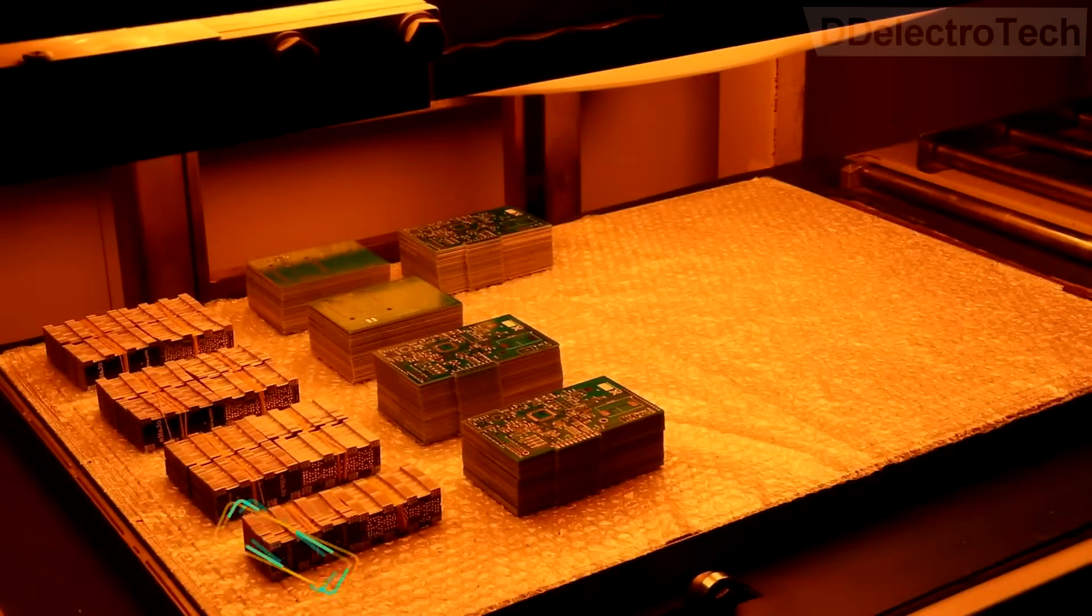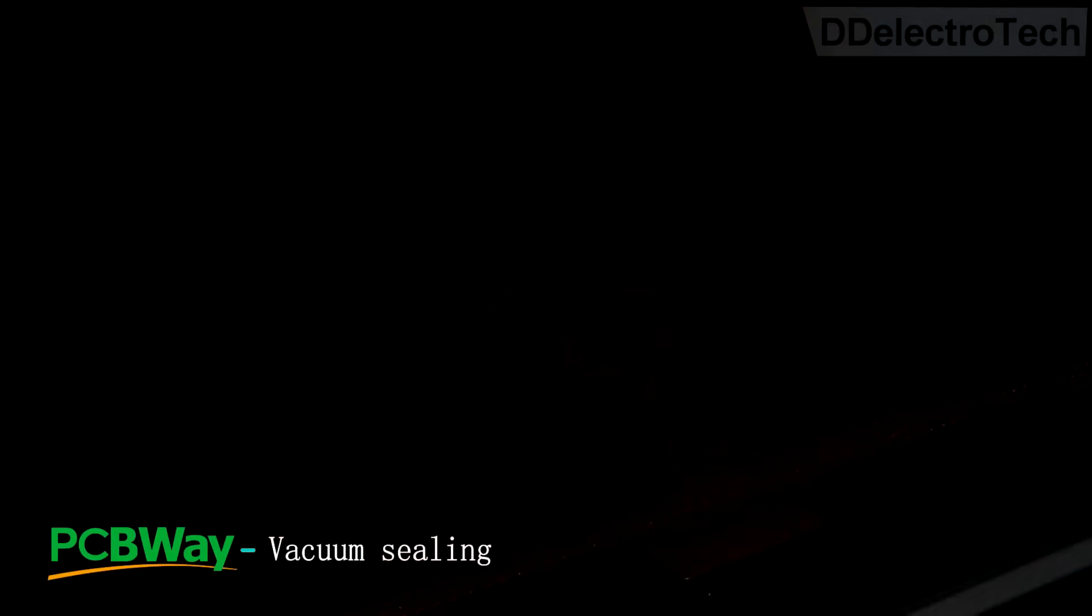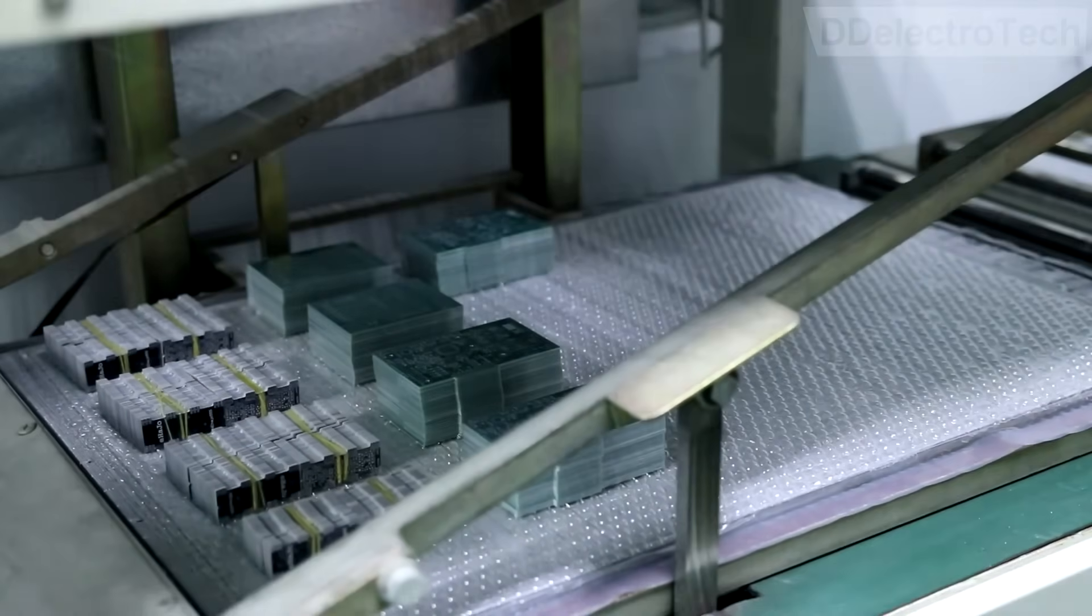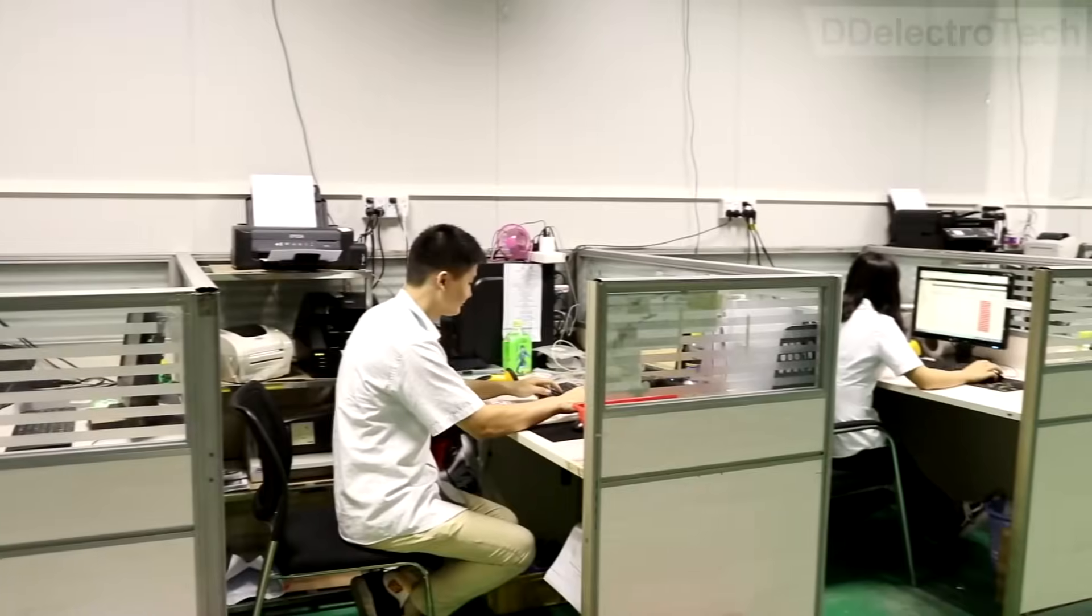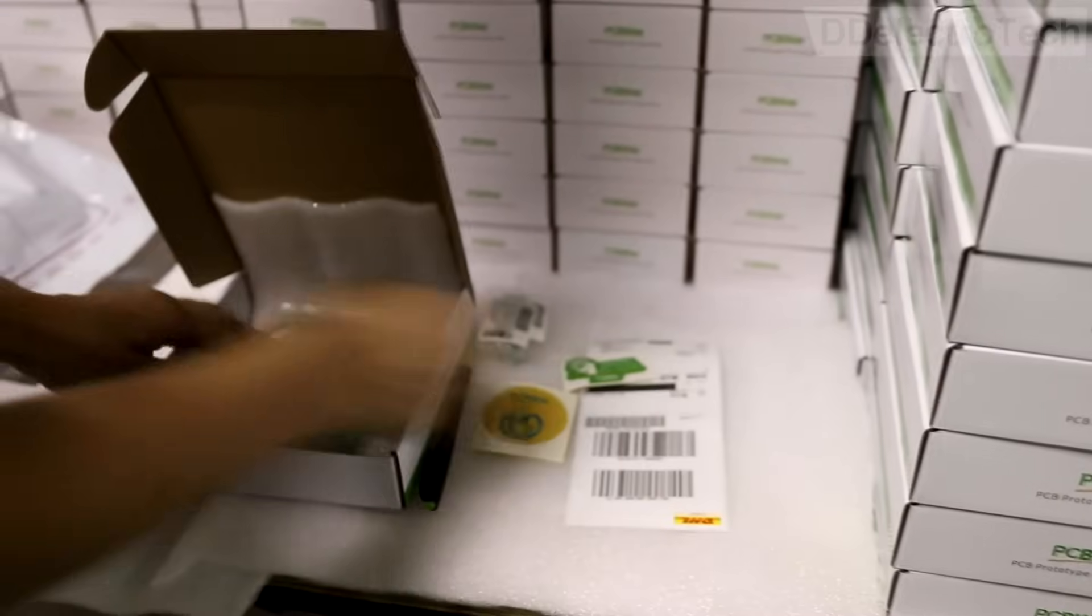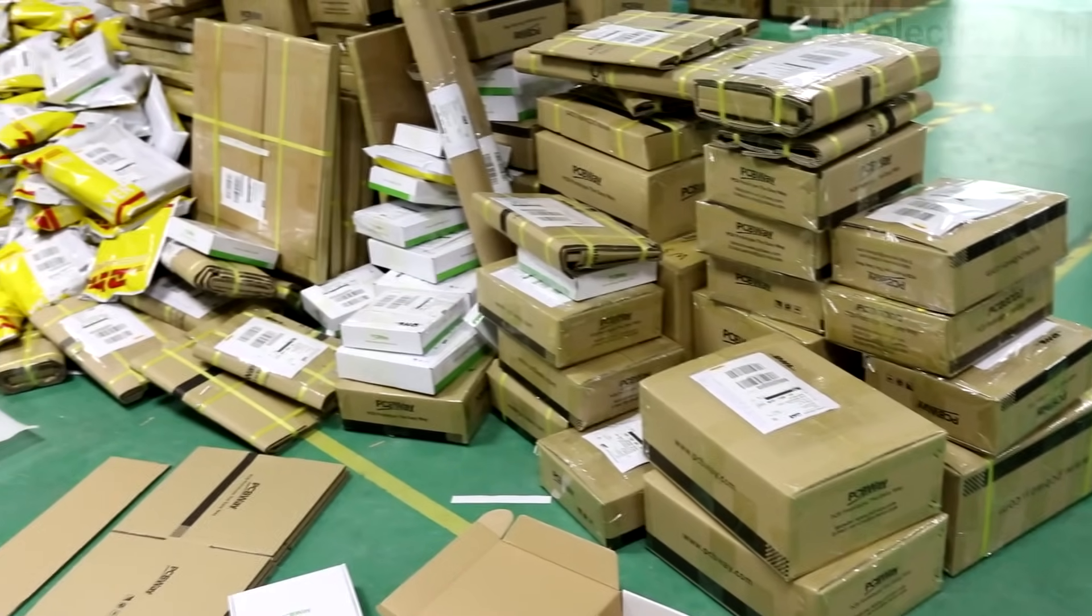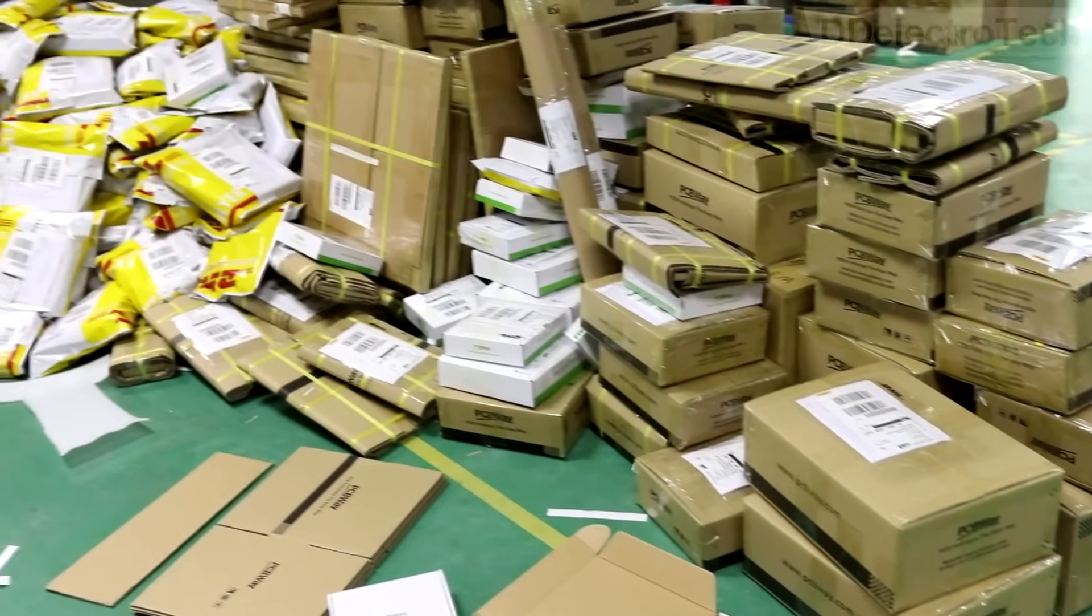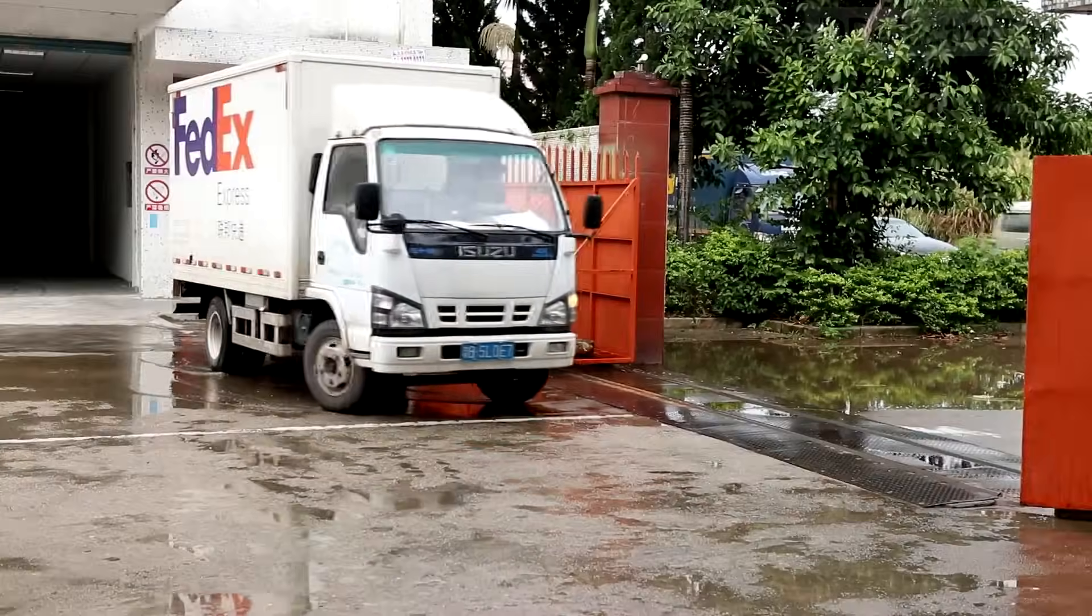After inspection, the PCBs are vacuum sealed and bubble wrapped to keep out dirt and moisture. Then the packets come to the packing room. After printing out the production release note, PCBs are securely boxed inside foam wrapper. And at the end of the day, the courier comes and takes the package and delivers all over the world.